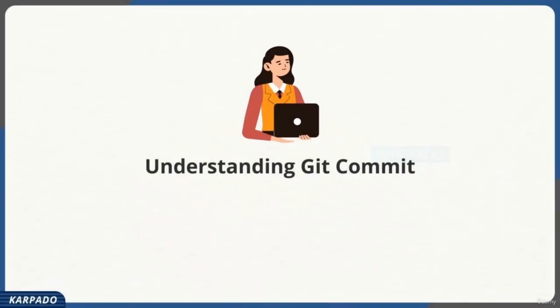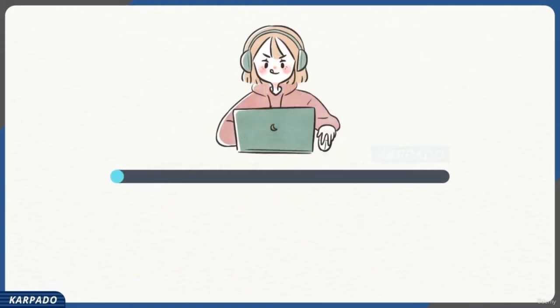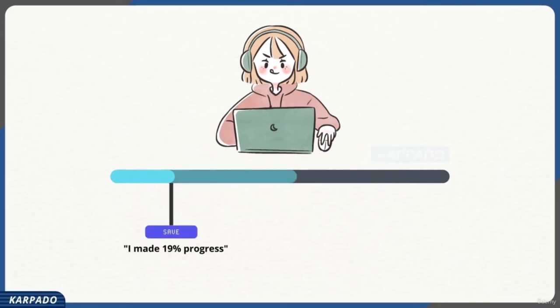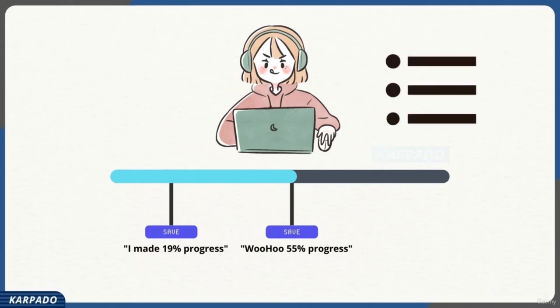You've probably heard of 'git commit' — but what exactly is it? Imagine you're playing a video game and you've made enough progress that you don't want to risk losing it, so you save the game at that point with a meaningful message. You continue, make more progress, and save again. If something goes wrong, you look at your list of saves and load the game at a particular point. Note that a save is not exactly a backup — it's more like a snapshot.